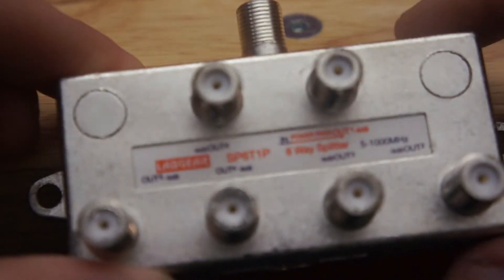One, two, three, four, five, six outputs. This is a digital type F-type splitter.